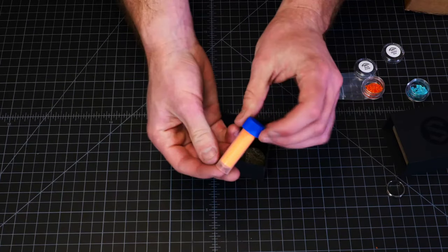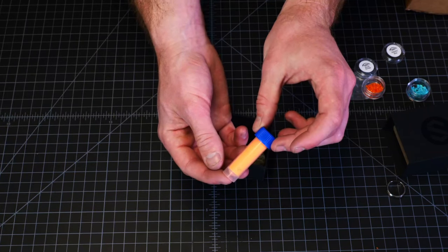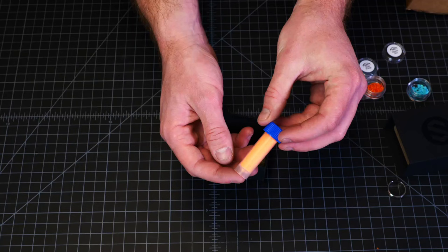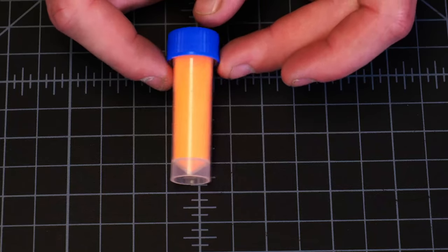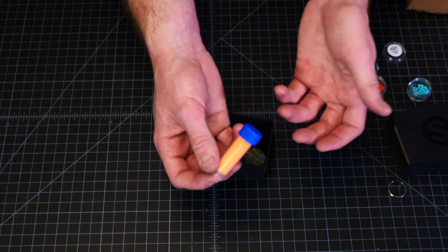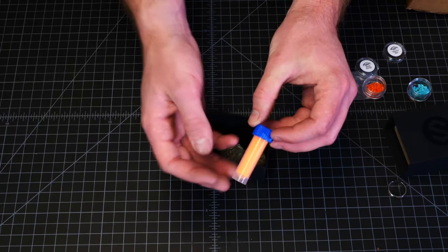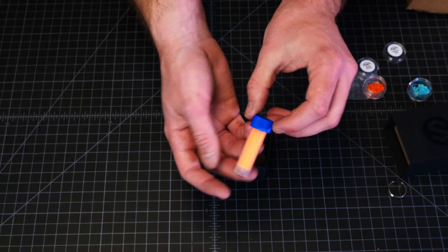Then we have our neon orange glow powder, which is just a really nice orange. It has a nice orange daytime color, a really nice vibrant one. And then it glows orange as well. So it's cool to work with because the day and the glow match without having to mix in any daytime color pigments.